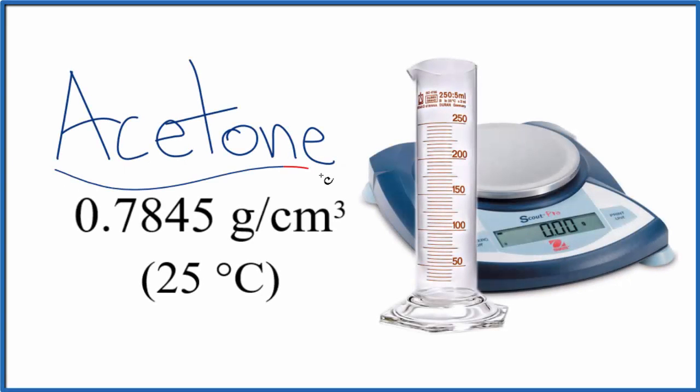Let's find the density for acetone. This is also called 2-propanone. So if you look it up, the density for acetone is 0.7845 grams per centimeter cubed.